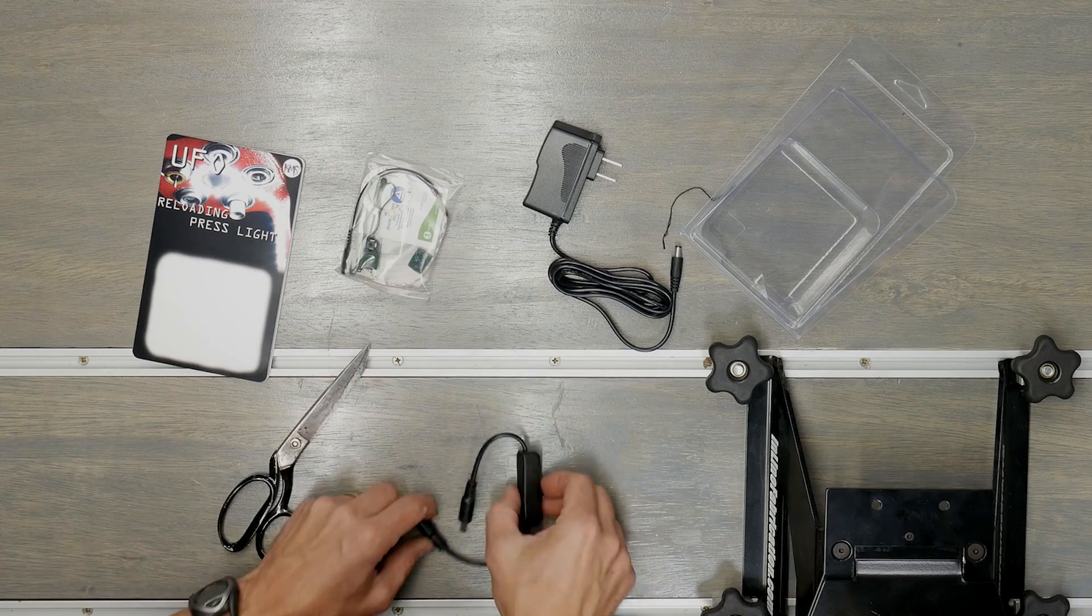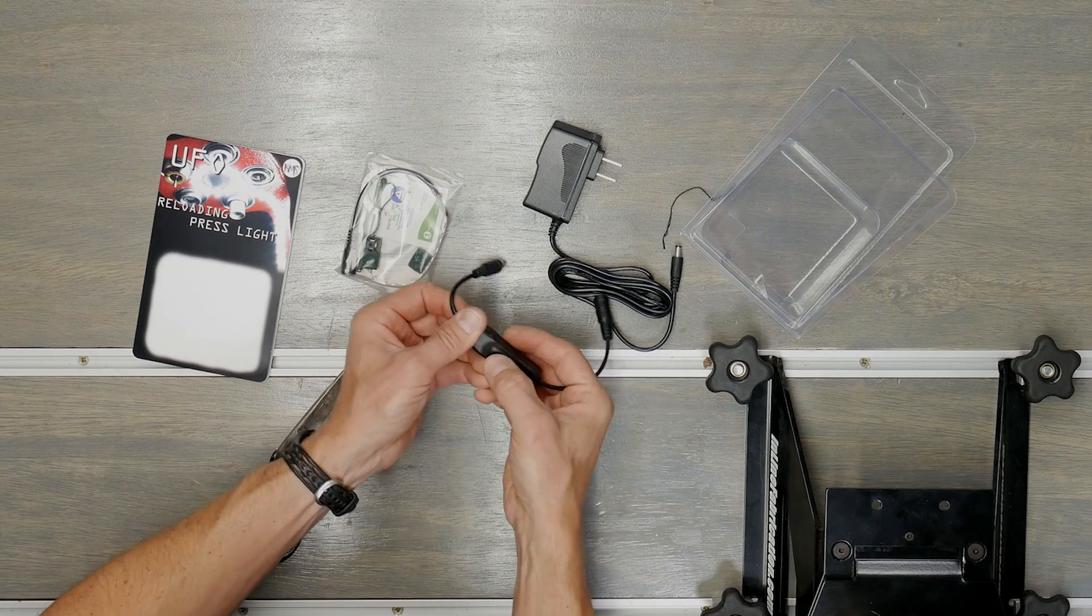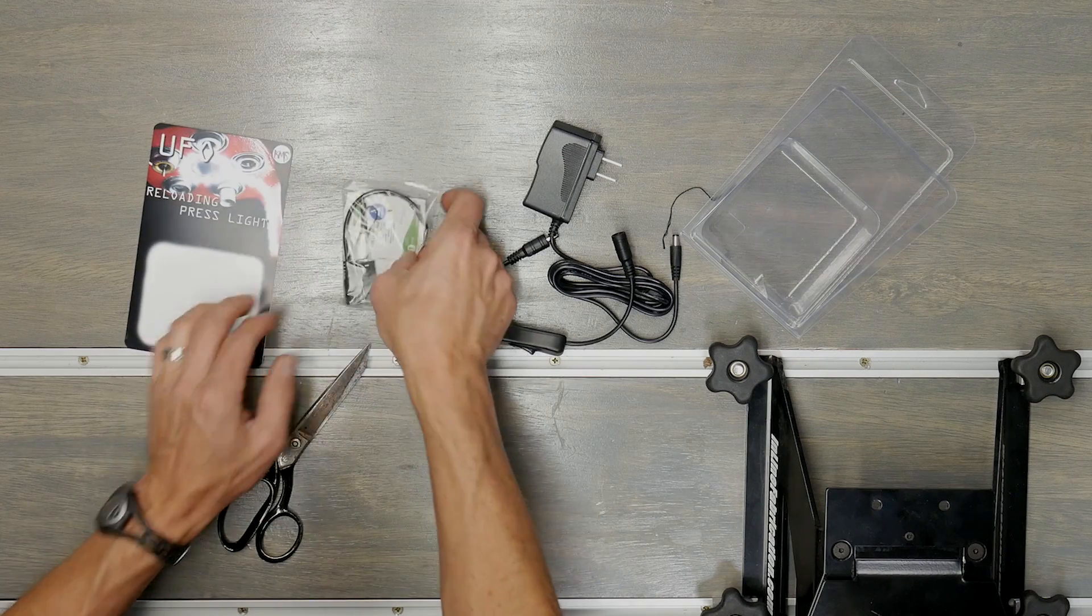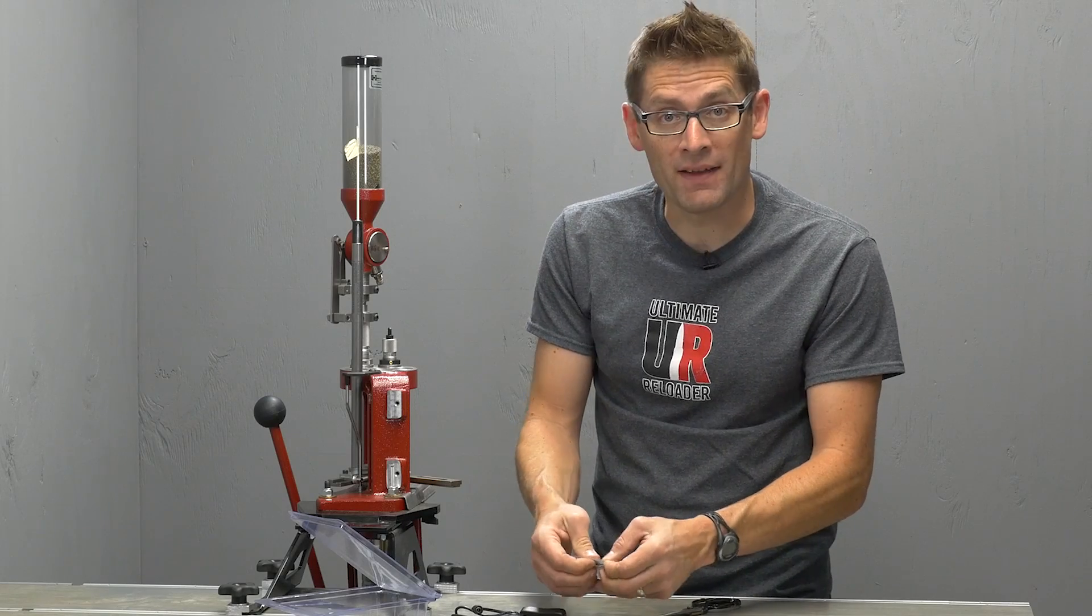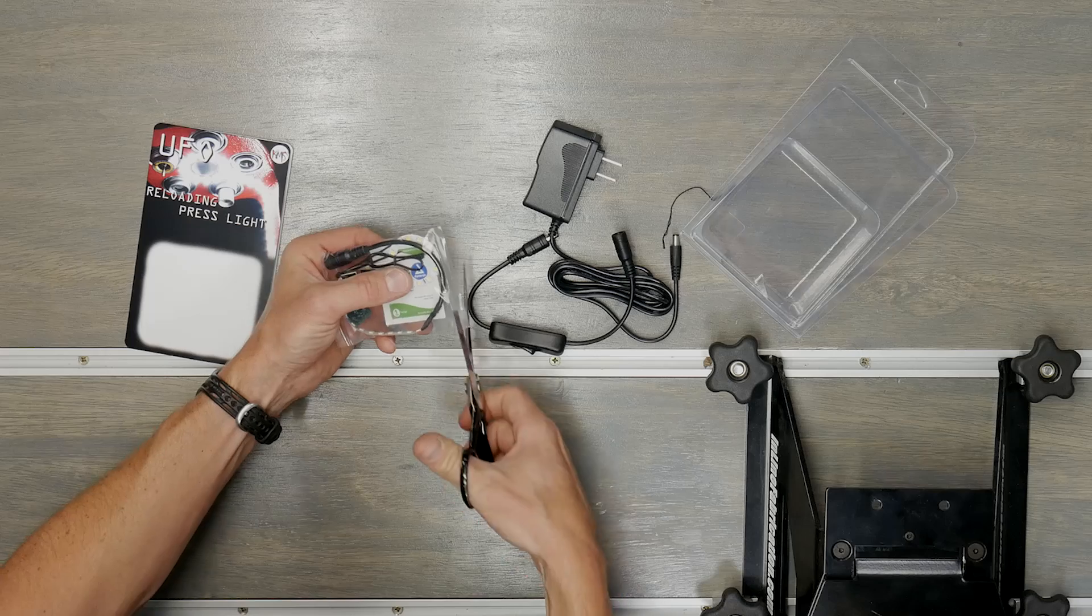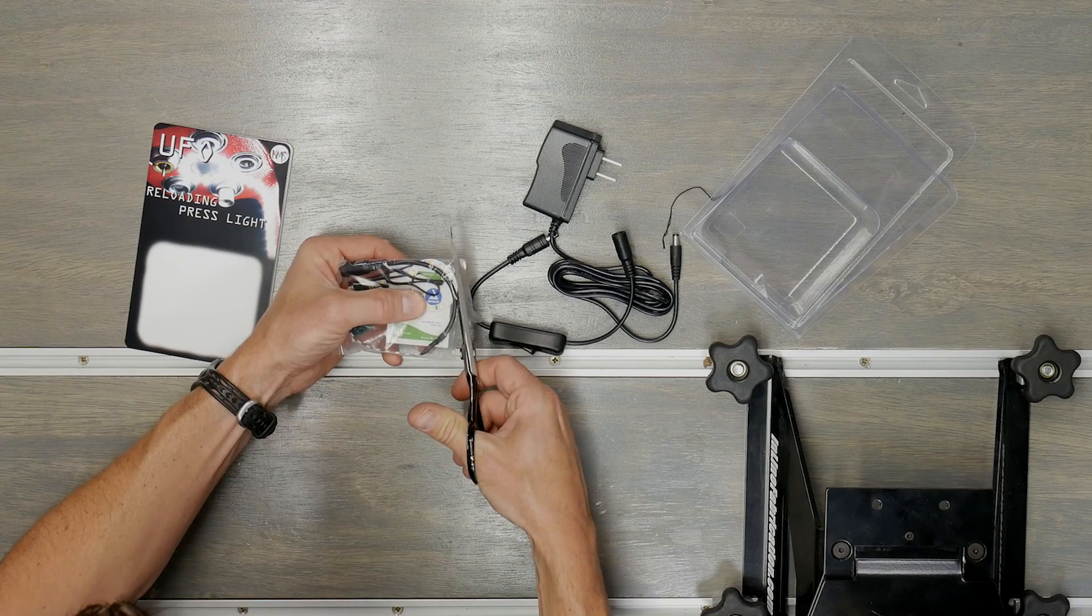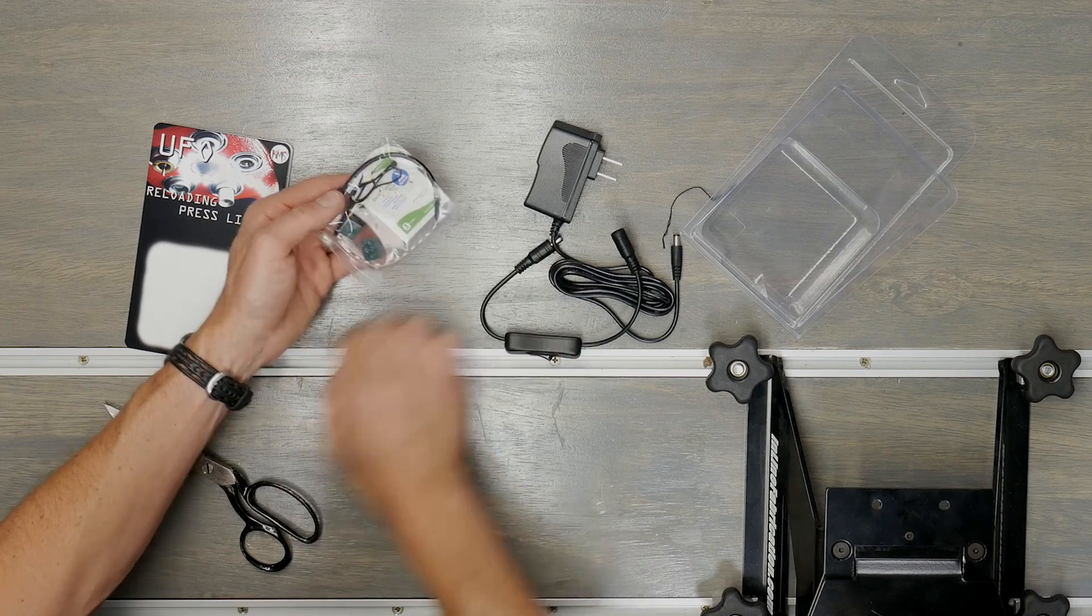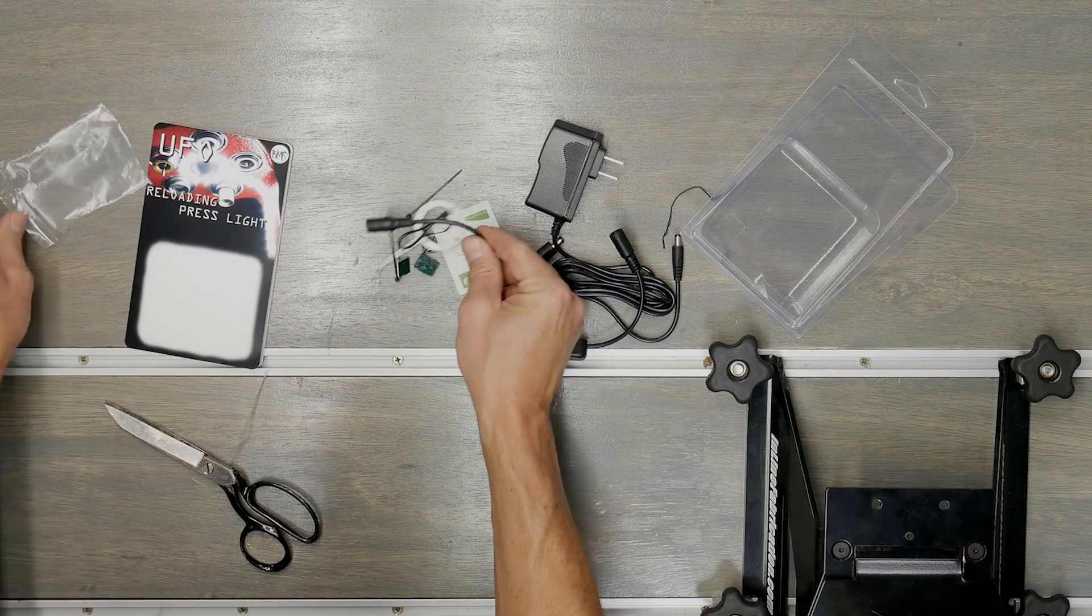So we've got that and then we've got this nice switch here too, which I like because then you can leave it plugged in, turn it on and off, that kind of thing. Really nice. So all of the installation components and the LED strip itself is in this plastic bag. Let's get that all set out.